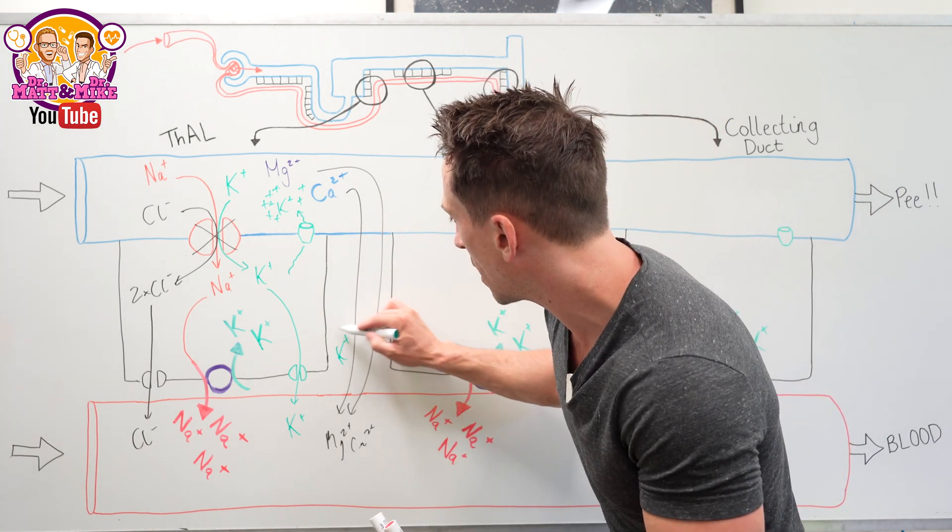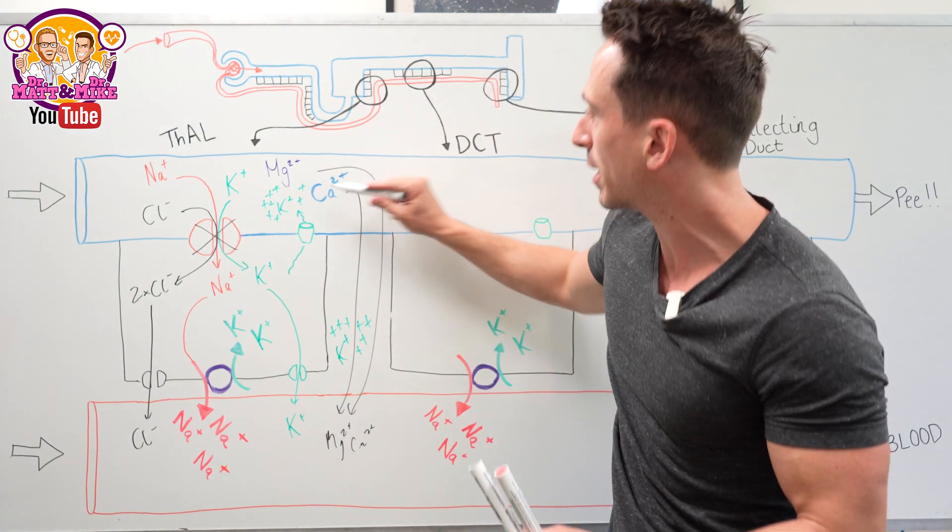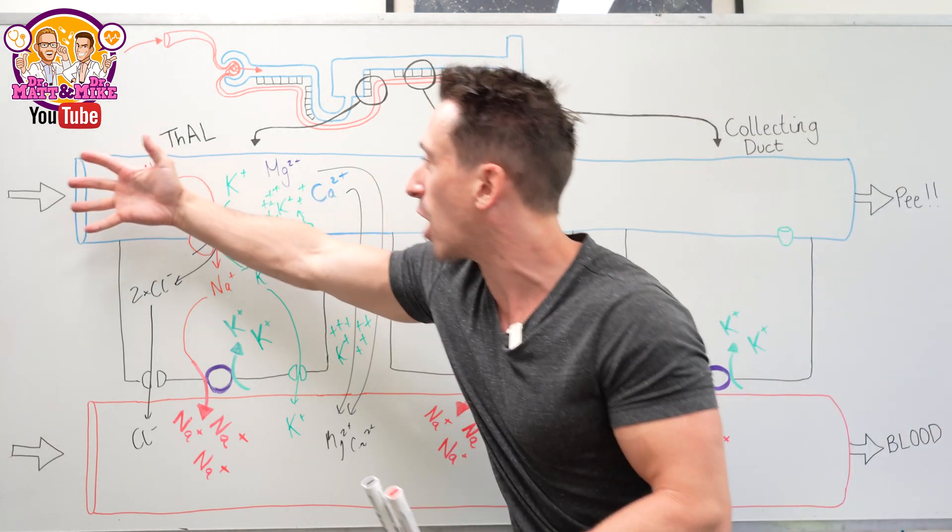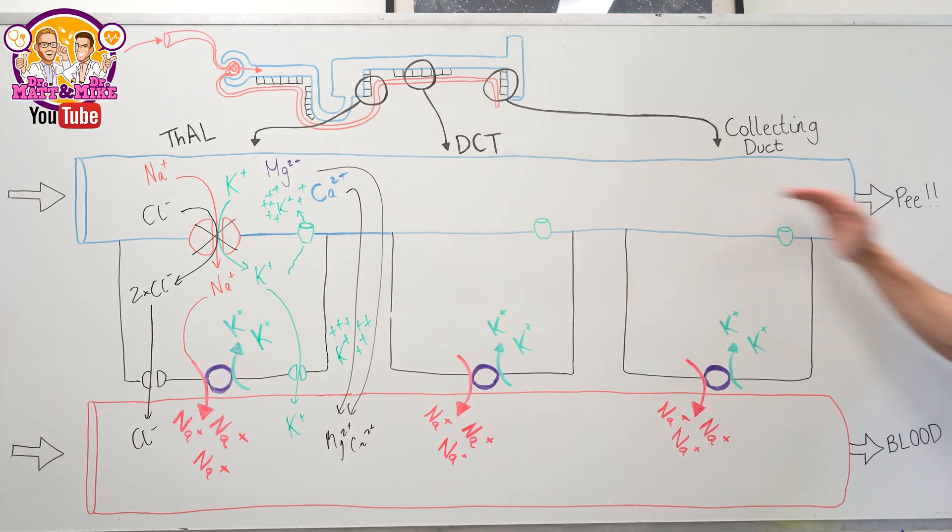This means potassium remains outside with its positive charge, repelling magnesium and calcium from moving between the cells, so they stay in the tubules as well. So you've got all these ions in the tubules pulling water towards them, and that ends up being peed out. That's how loop diuretics work.